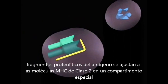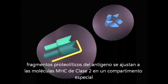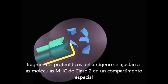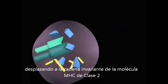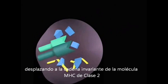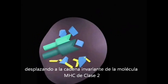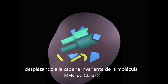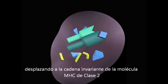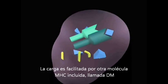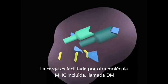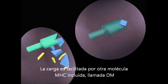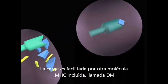Proteolytic fragments of the antigen bind to the MHC class II molecules in a special compartment, displacing the invariant chain of the class II molecule. Loading is facilitated by another MHC-encoded molecule called DM.